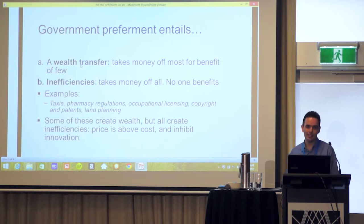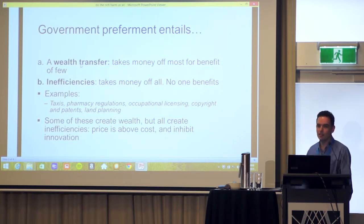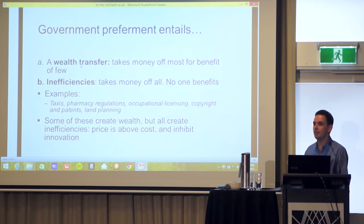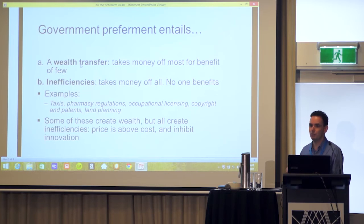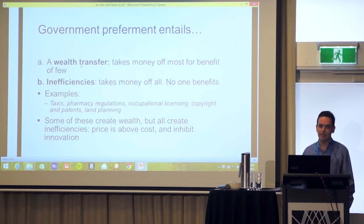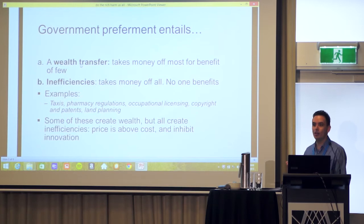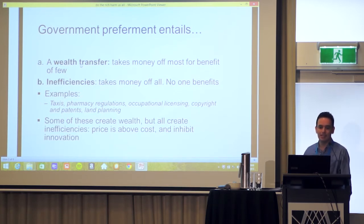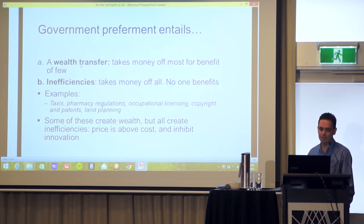Government preferment entails two things. First, it entails a wealth transfer — a transfer from the many to the few, to the people who are getting the government preferment. It takes the money off most for the benefit of the few. The second thing it entails is inefficiency, which takes money off everybody in society. Some benefit from the wealth transfer; nobody benefits from the inefficiencies.